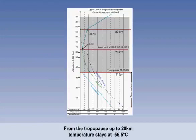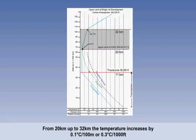From the tropopause onwards, we have the stratosphere, and ISA assumes the temperature within the first part of this layer remains constant at minus 56.5 degrees Celsius, up to 20 kilometres or 65,617 feet. From 20 kilometres upwards to 32 kilometres, there is a gradual increase in temperature of 0.3 degrees Celsius per 1,000 feet, or 0.1 degrees Celsius per 100 metres. This is the part of the stratosphere that contains ozone, which causes the surrounding air to warm.